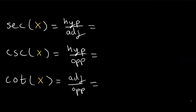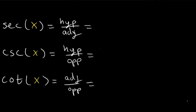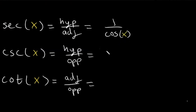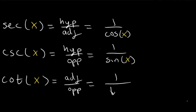You may have already noticed that secant, cosecant, and cotangent are just the inverses of sine, cosine, and tangent. Secant is also equal to 1 over the cosine of x. Cosecant is equal to 1 over sine of x, or theta, or whatever variable you have. And cotangent is 1 over tangent of x.